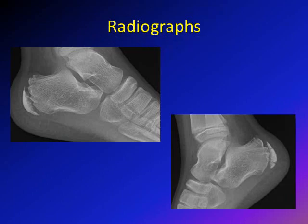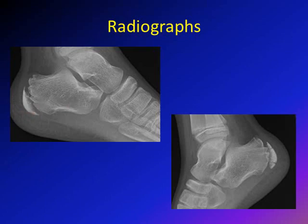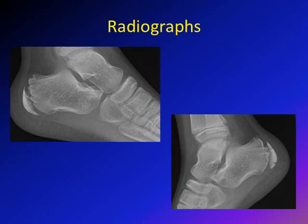Let's discuss X-ray findings in cases of Severs disease. This is an X-ray lateral view of the calcaneus. As you can see, there is sclerosis of the calcaneal apophysis. Previously, this was thought to be an indication of Severs disease. However, we know now that sclerosis of the calcaneal apophysis — where the apophysis appears more dense than the rest of the bone — occurs with the same incidence in normal children and in children with Severs disease. Fragmentation, as you can see in this X-ray, happens more frequently in cases of Severs disease.